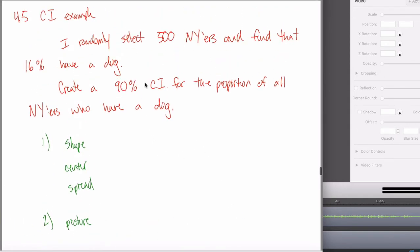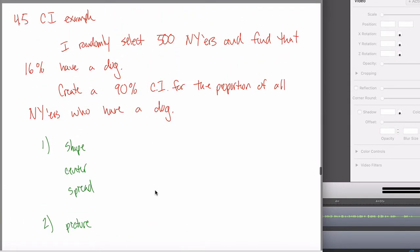I'm going to try to make this as similar as possible to what we did in section 4.2, because I want to leverage all the knowledge you built doing confidence intervals for the population mean and apply it here where we do confidence intervals for the population proportion. Let's work through the problem.